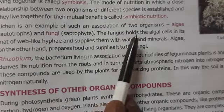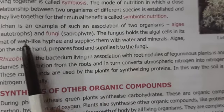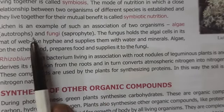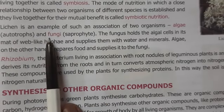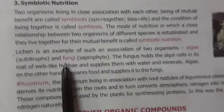So lichen — a combination of fungi and algae — is an example of symbiotic nutrition.